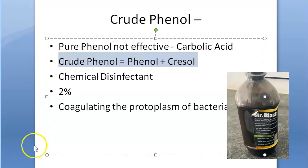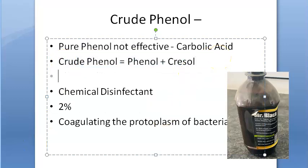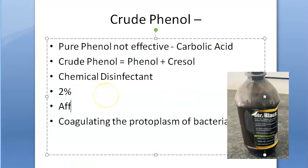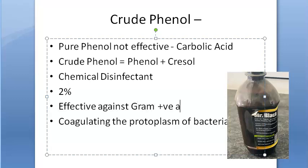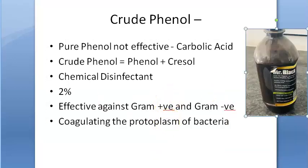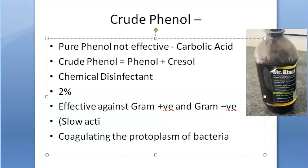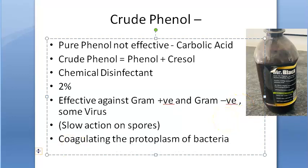Crude phenol is effective against gram positive and gram negative bacteria. It has slow action on spores, and it is also not very effective against acid-fast bacteria. It is effective against some viruses as well — not all viruses.